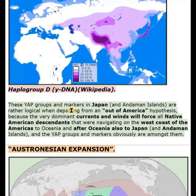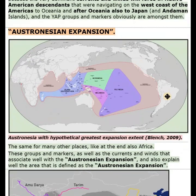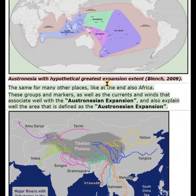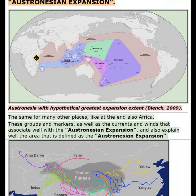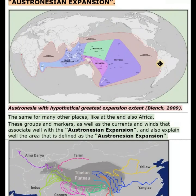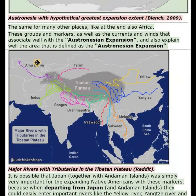These YAP groups and markers in Japan and Andaman Islands are rather logical when departing from an out-of-America hypothesis, because the very dominant currents and winds will force all Native American descendants that were navigating on the west coast of the Americas to Oceania, and after Oceania also to Japan and Andaman Islands, and the YAP groups and markers obviously are amongst them. The same applies for many other places, like at the end also Africa. These groups and markers, as well as the currents and winds, associate well with the Austronesian expansion and also explain well the area defined as the Austronesian expansion.